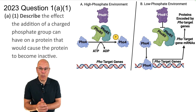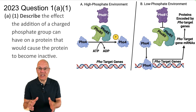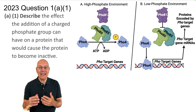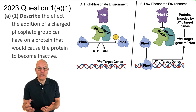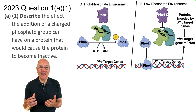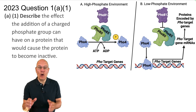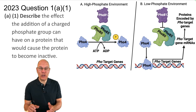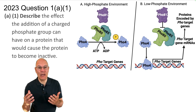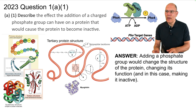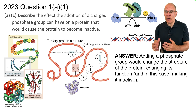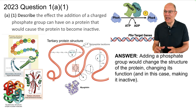Question 1a, Part 1: Describe the effect the addition of a charged phosphate group can have on a protein that would cause the protein to become inactive. Adding a phosphate group would change the structure of the protein, changing its function, and in this case making it inactive.